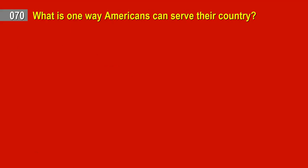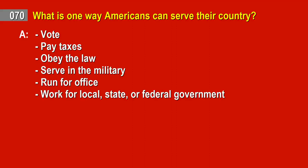Question 70. What is one way Americans can serve their country? Answer: Vote. Pay taxes. Obey the law. Serve in the military. Run for office. Work for local, state, or federal government.